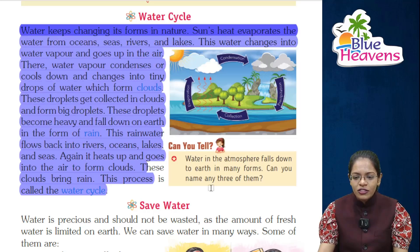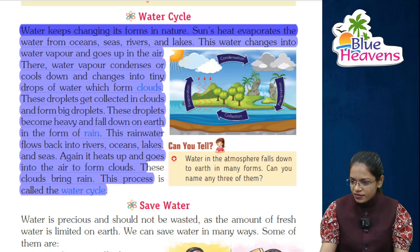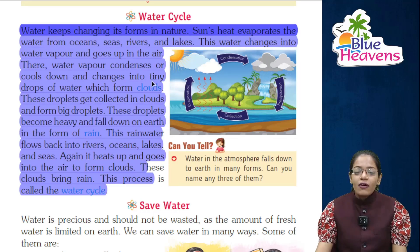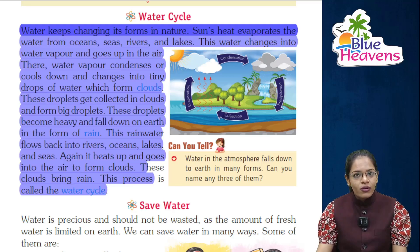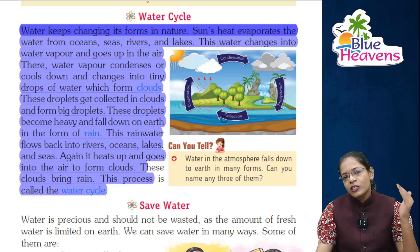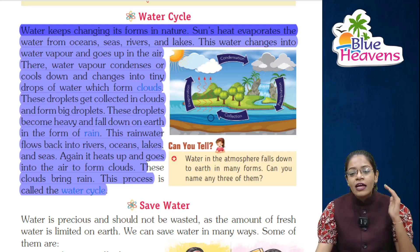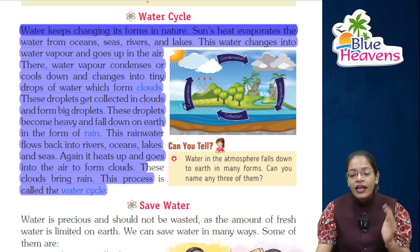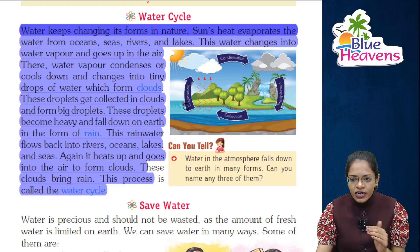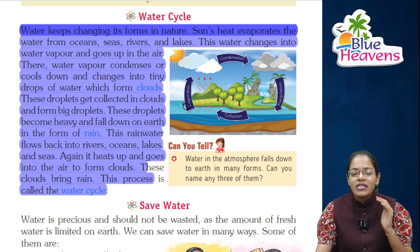Now look at the image. This image will show you what happens: first there is a collection of water; then when the sun heats the water, it evaporates; next, clouds form through condensation; and when rain falls, we call it precipitation.